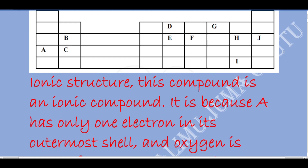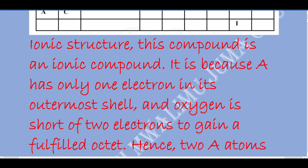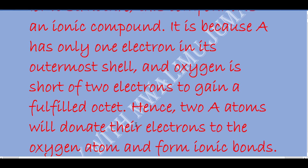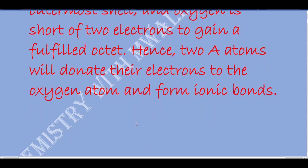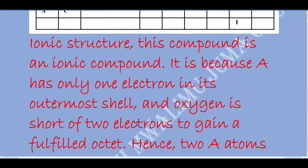This is because A has only one electron in its outermost shell or outermost energy level, and oxygen is short of two electrons to gain a fulfilled octet state. Hence, two A atoms will donate their electrons to oxygen to form ionic bonds. So it is an ionic structure.